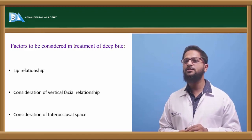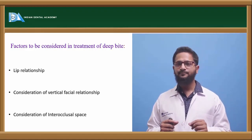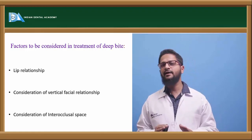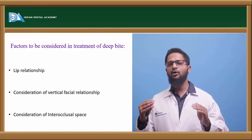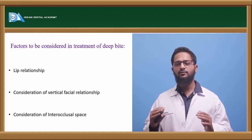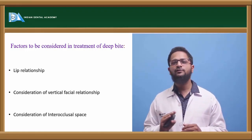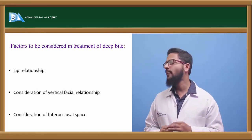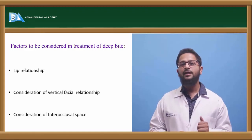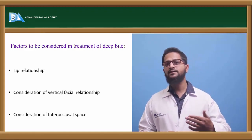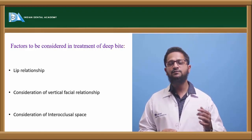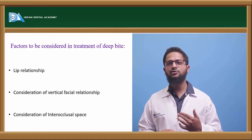Next is consideration of interocclusal space. The normal interocclusal space at the area of premolars is 2-3 mm. If there is increased interocclusal space — meaning more than 2-3 mm — this means the molars or posteriors have not erupted fully, and in these conditions we should do more eruption or extrusion of the posteriors to correct the deepbite.